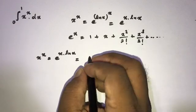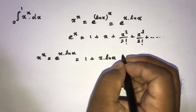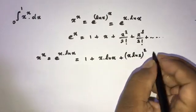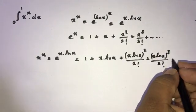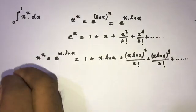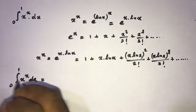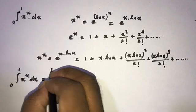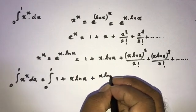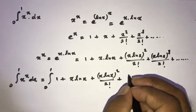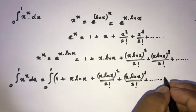According to this expansion, x^x equals 1 plus x·ln(x) plus (x·ln(x))² over 2 factorial plus (x·ln(x))³ over 3 factorial, continuing to infinity. Our question is the integral from 0 to 1 of x^x dx, which we can now evaluate by integrating this series: the integral from 0 to 1 of 1 plus x·ln(x) plus (x·ln(x))² over 2 factorial plus (x·ln(x))³ over 3 factorial and so on, dx.